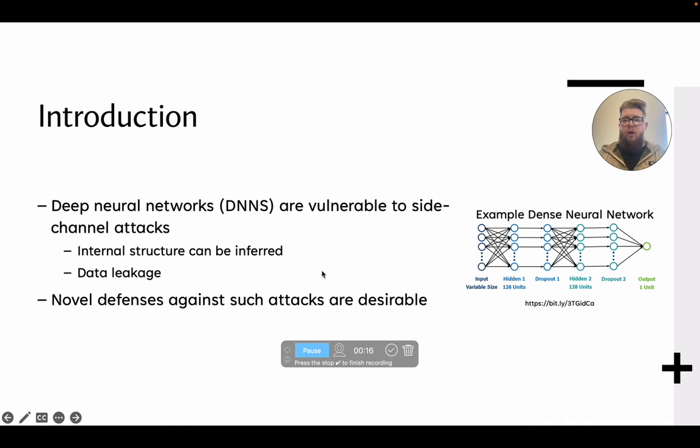The whole idea here is that with the typical deep neural networks that we tend to utilize today for a lot of massive applications, they're very vulnerable to side-channel attacks. In fact, to the point that if we can gather power traces while these are actively running or being trained,